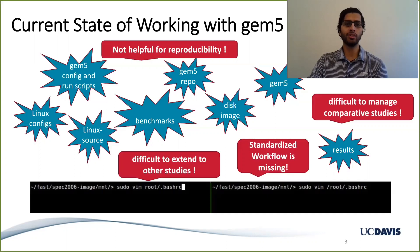Take an example of a full system simulation in which you might have to create a disk image. Today the online help available to create disk images to use with Gem5 may or may not work. As a result, users would download disk images or create a new disk image and then separately compile their benchmarks and add them to the disk image after mounting it to their file system.